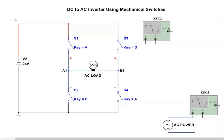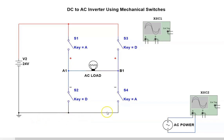In order to understand three-phase inverters, I have a simple single-phase inverter constructed using mechanical switches. I have a 24-volt source, a positive rail, a negative rail, and a load connected between points A1 and B1.